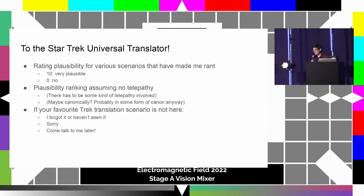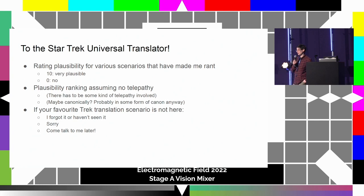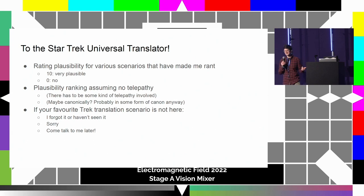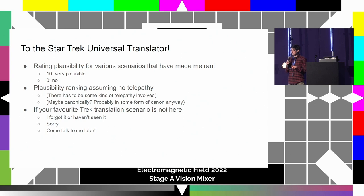On to the Star Trek rants. I'll be rating these out of 10 where 10 is plausible. I'm assuming there's no telepathy - if there's telepathy, all of this makes sense, but brings in some ethical questions which I guess we just don't talk about. So: no telepathy. I'll explain the example and then explain why I've ranked it as plausible or not. This section is rated 12 for language.